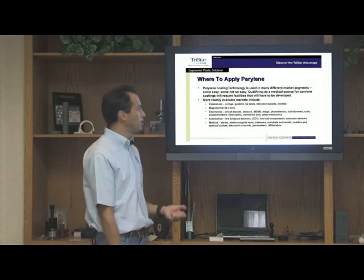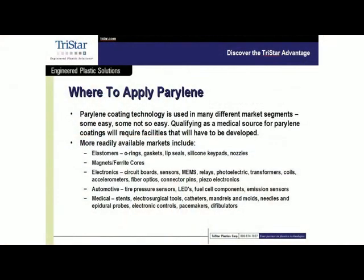Perylene is applied to a whole host of devices. From the electronics industry, we have ferrite cores and circuit boards. From medical devices, it would be stents, pacemakers, defibrillators, needles, and sometimes insertable bladders or heart valves.